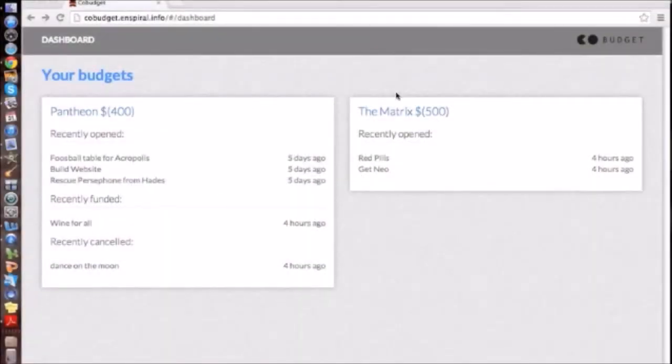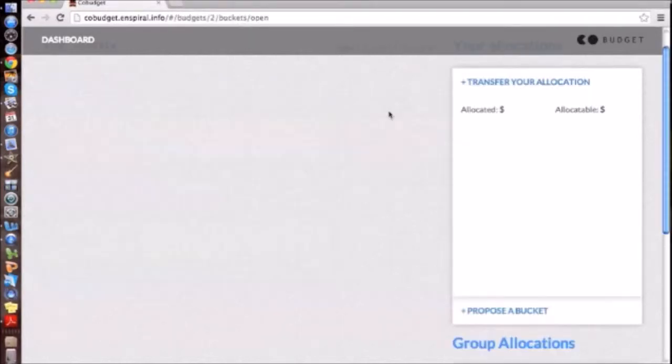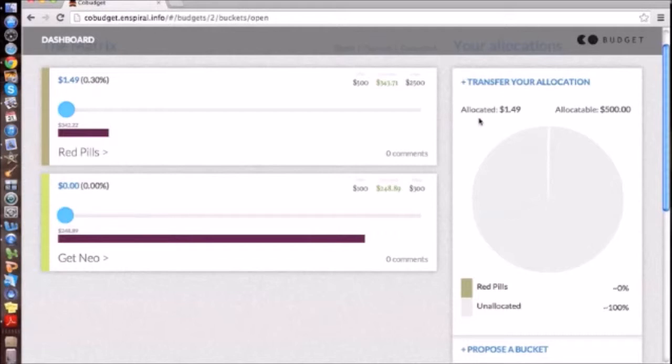So this is the actual co-budget itself. You can see that I have access to two budgets. If I drill down into the matrix budget, I can see that I have $500 in allocations. I've allocated $149 already, and I have the ability to move the sliders over so I can see other people's allocations here. Someone has already allocated $248 here and $342 here into red pills. I can slide my allocations over and I can see the pie chart update automatically as I do that.